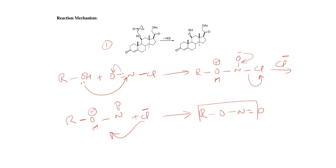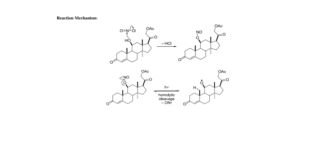Then this alkyl nitrite, when exposed to light, causes homolytic cleavage. In homolytic cleavage, the two bonded electrons split and one electron moves to each bonded atom. For example, if bond A–B is present with two bonded electrons and is homolytically cleaved, one electron moves to atom B and one electron remains on atom A.